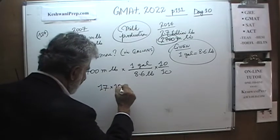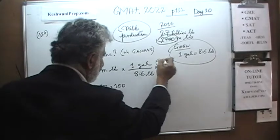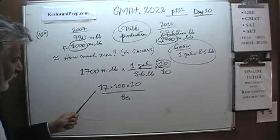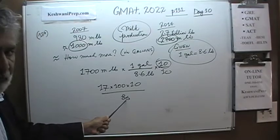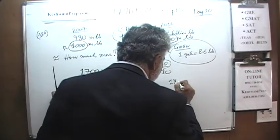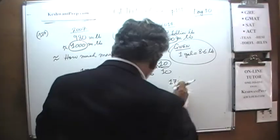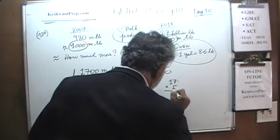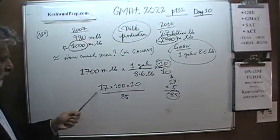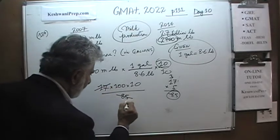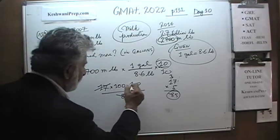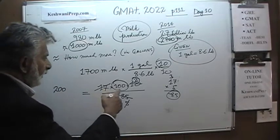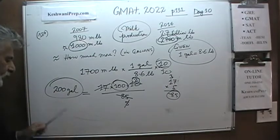We write 1,700 as 17 times 100, so we have 17 times 100 times 10 on top, and 86 on the bottom. Now we approximate again: 17 times 5 is exactly 85, so we pretend the 86 is 85. Divide top and bottom by 17 — the 17 cancels, 85 becomes 5. Divide top and bottom by 5 again: 5 goes to 1 and 10 becomes 2. We end up with 2 times 100, so the answer is 200 — not pounds but gallons. The increase is 200 million gallons.